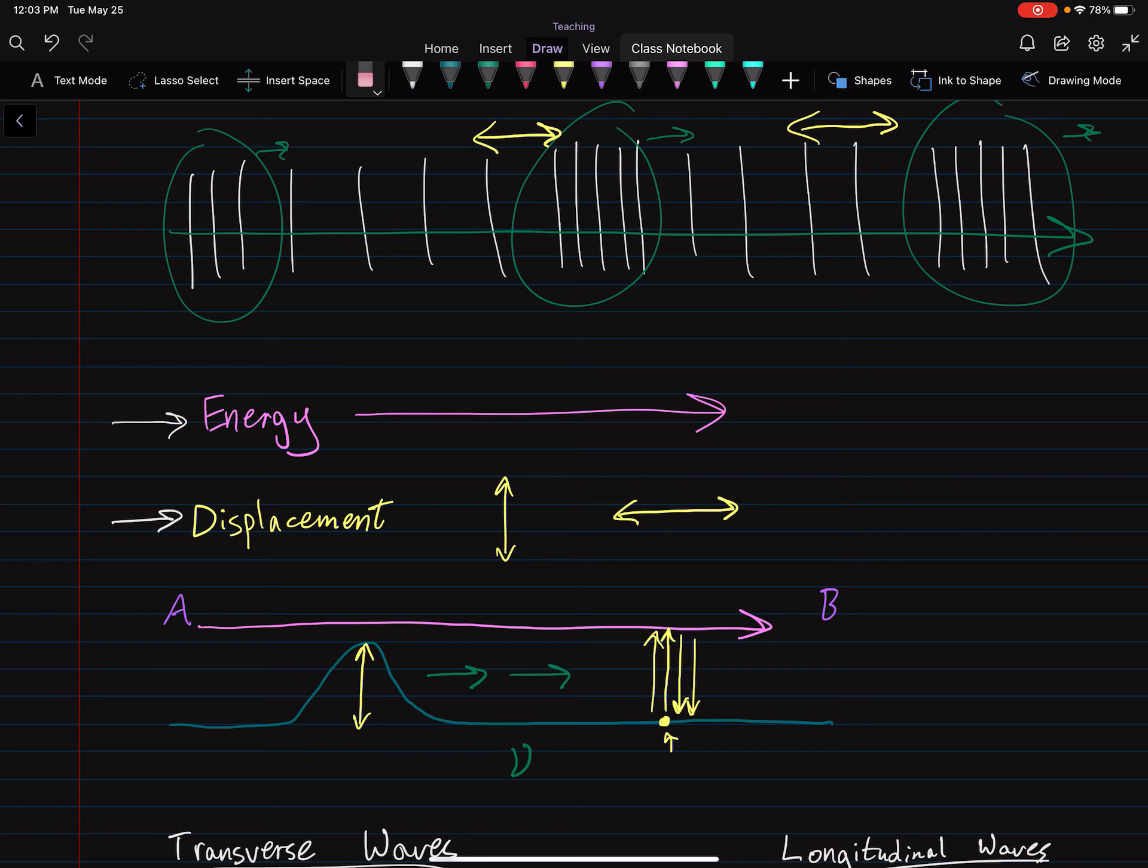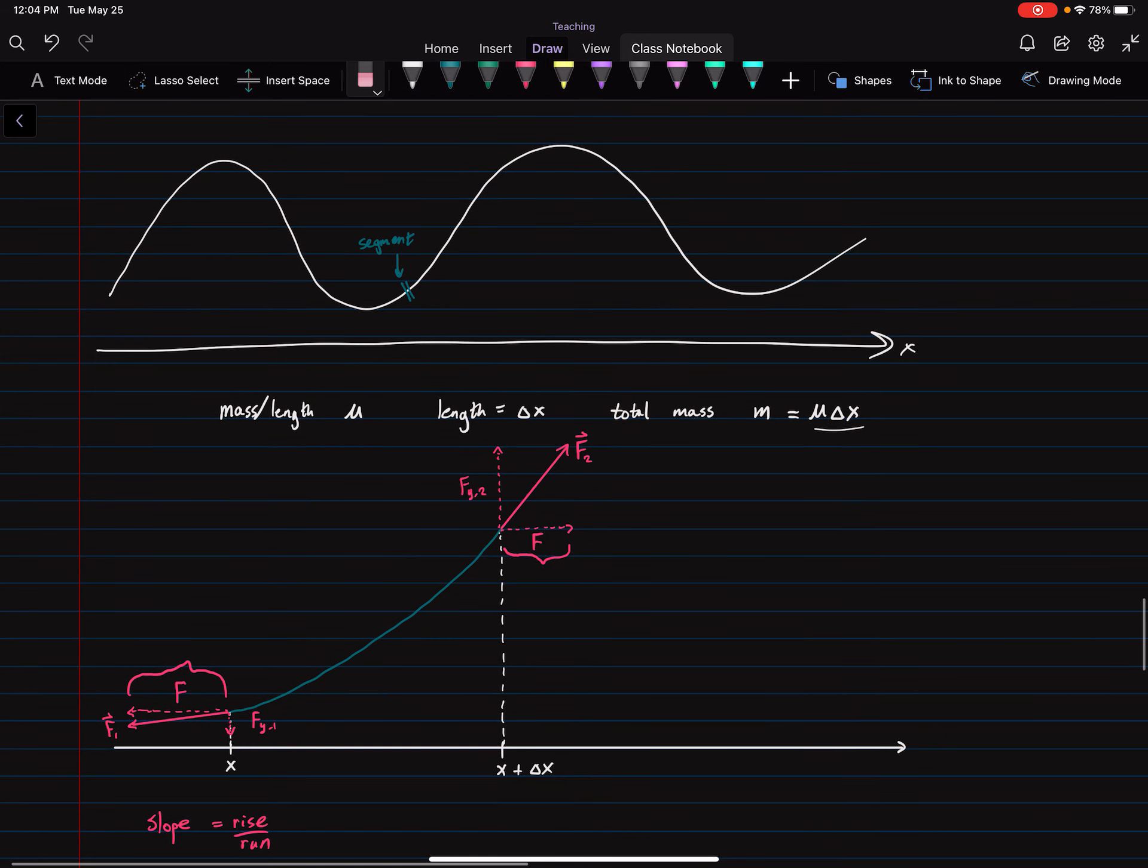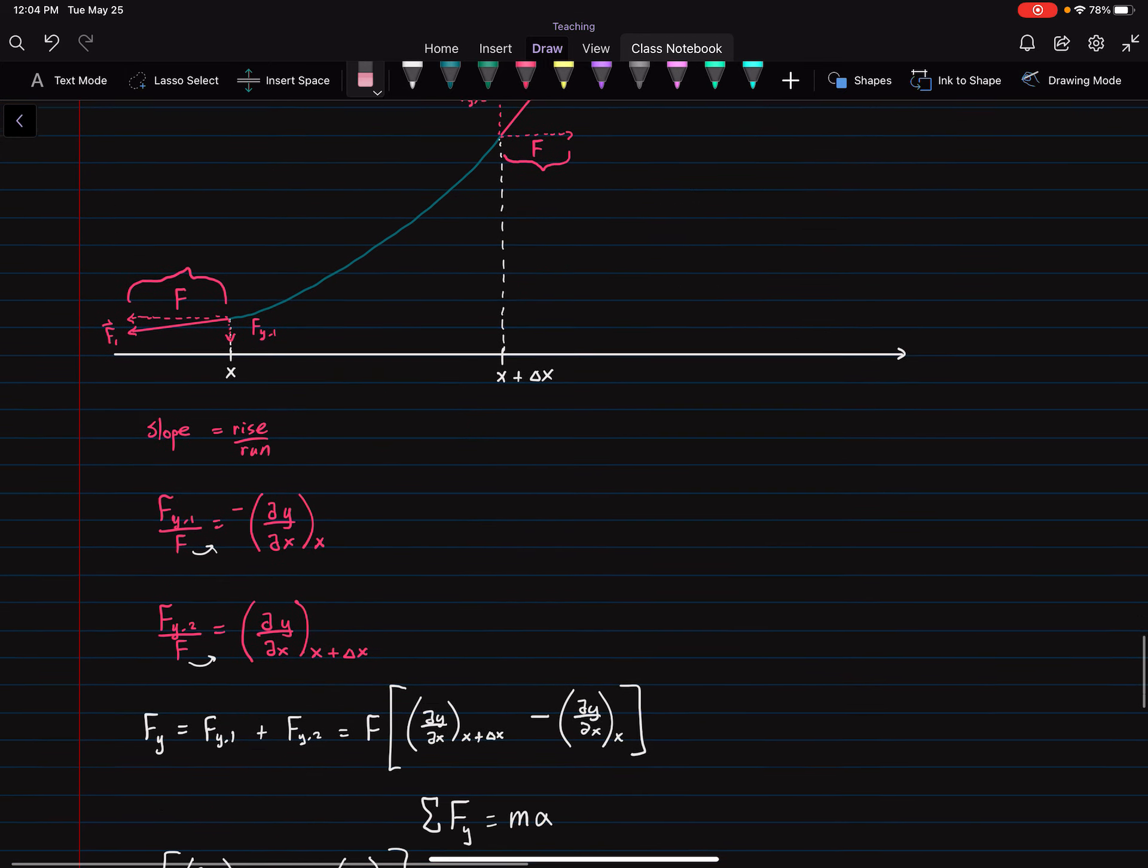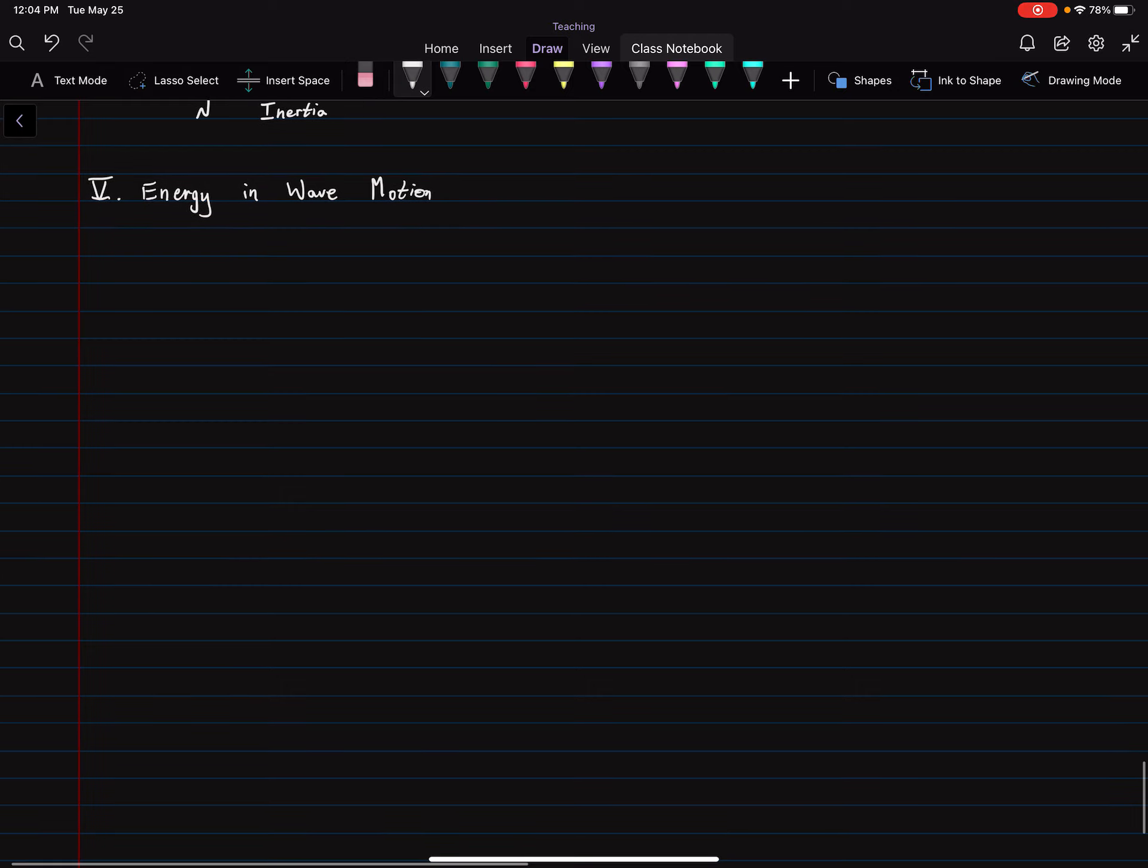And then we found the wave speed in terms of some more fundamental properties of the material. And that allows us to now talk about the energy as it propagates. And so last time, we went through this curious thought process with a segment of string to arrive at that wave speed.